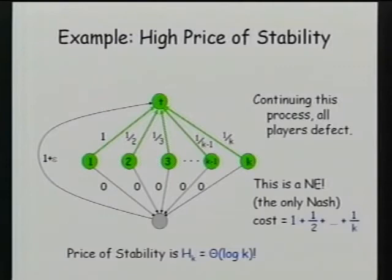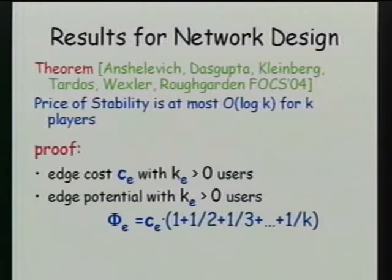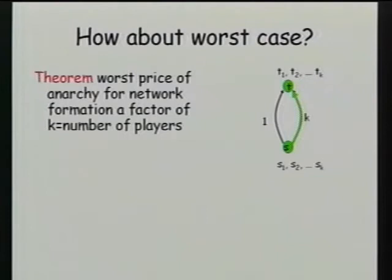One limitation is the severe coordination problem: the potential function technique speaks to the best equilibrium, but making users actually select that particular equilibrium is difficult. I would be much happier if the bound were about the worst equilibrium, or instead about a reasonable principle for equilibrium selection — that decent users won't choose the bad equilibrium. Indeed, research is going in this direction.